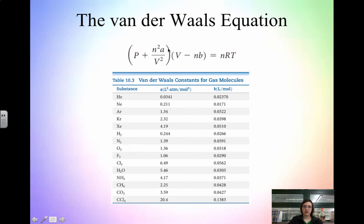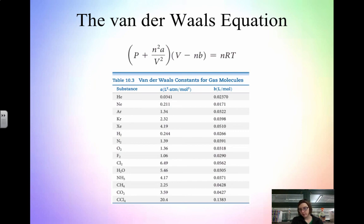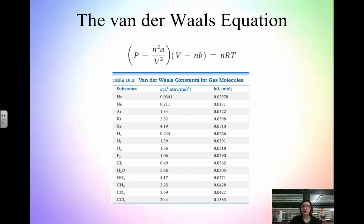Here again is the Van der Waals equation, along with a table of constants. Notice that every gas has different constants because every gas is different. These are the values you would plug into the Van der Waals equation. Again, you're not doing calculations with this — what you need to know is how gases deviate at high versus low temperature, and at high versus low pressure: when do they behave ideally, why do they behave ideally, and why do they not? Read through section 10.9, take notes, and bring any questions to class.